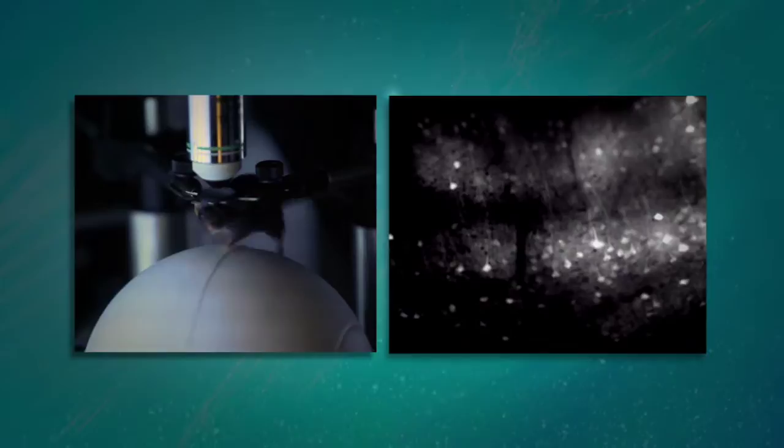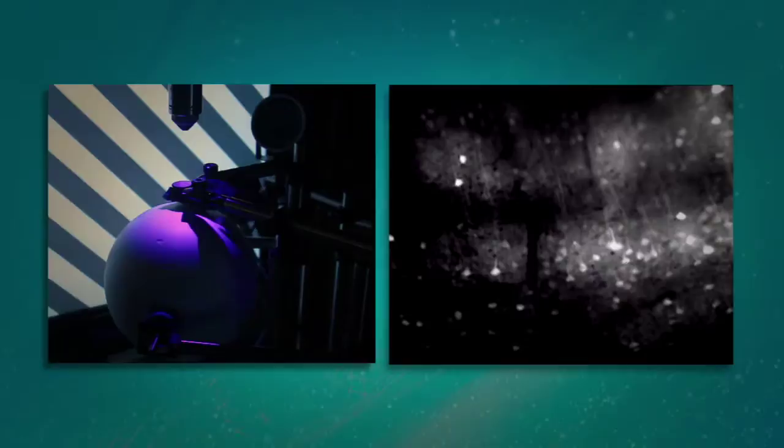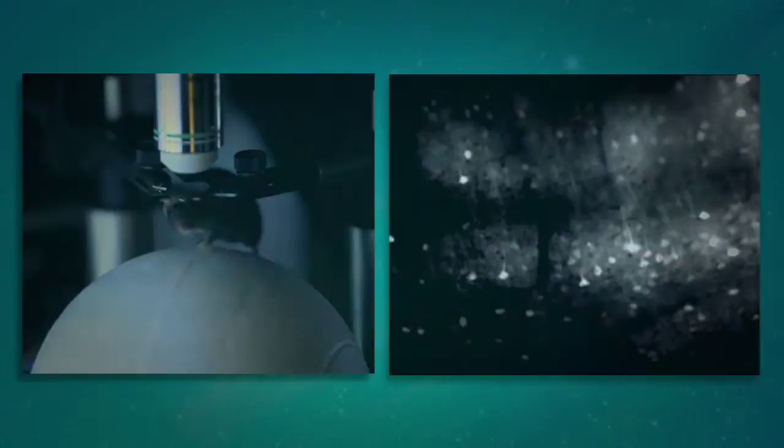And we did this by recording the visual response properties of neurons across all layers of cortex to presentations of visual stimuli at different locations and in different orientations, while the mouse was awake and running on a ball. We extended previous findings of a salt and pepper organization of these neurons to the deepest layers of cortex.